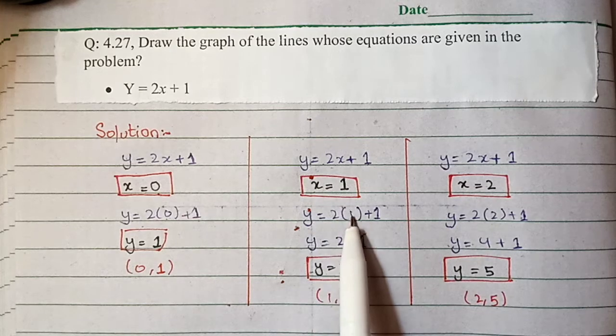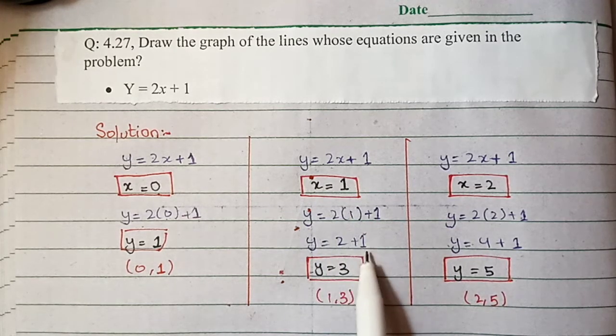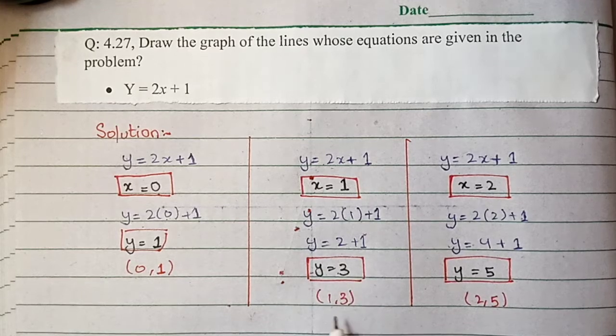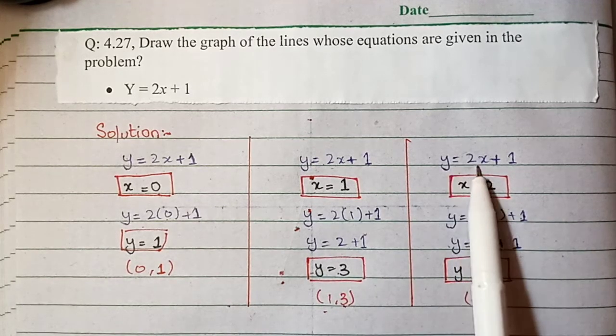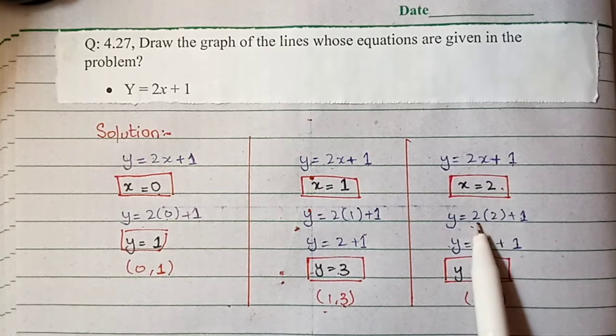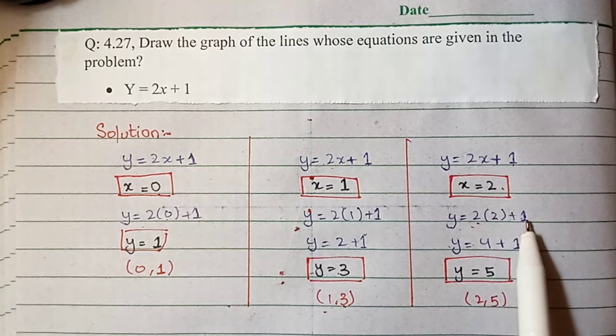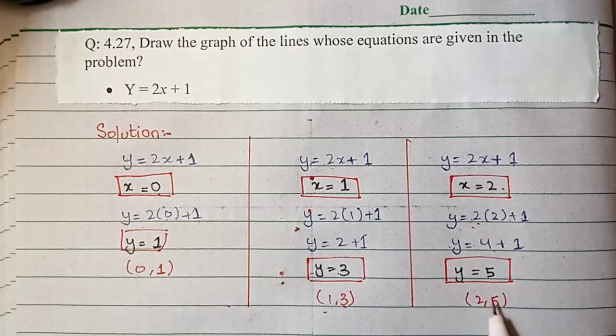Next, for Y = 2x + 1, let x = 2. Y = 2(2) + 1 = 4 + 1 = 5. So when x = 2, y = 5.